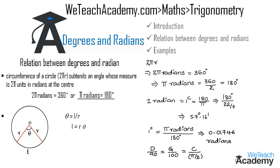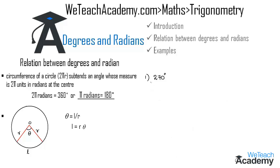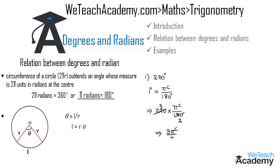Now let us discuss the examples. In the first example, we have to express the sexagesimal measure of 270 degrees as a radian measure. Using the formula 1 degree = πc/180, to convert 270 degrees to radians we multiply 270 by π/180. Simplifying, 180 goes into 270 giving 3/2, so the result is 3πc/2, which is the radian measure of 270 degrees.